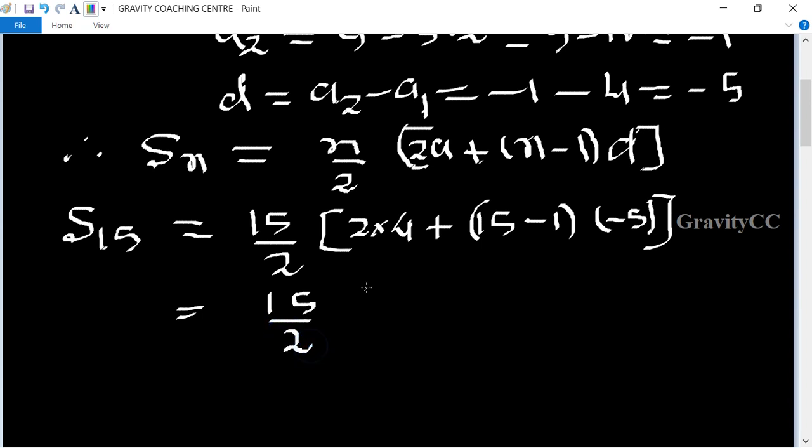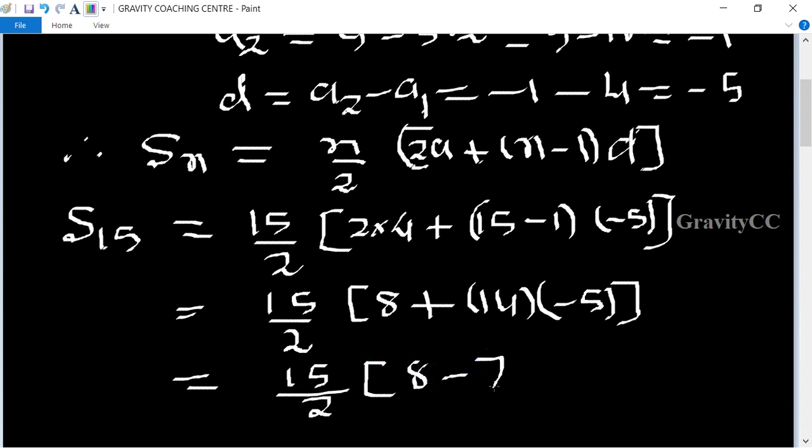This equals 15 upon 2 times [8 plus 14 times minus 5] equals 15 by 2 times [8 minus 70].